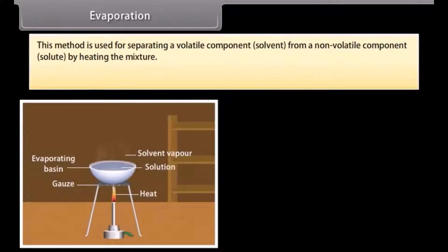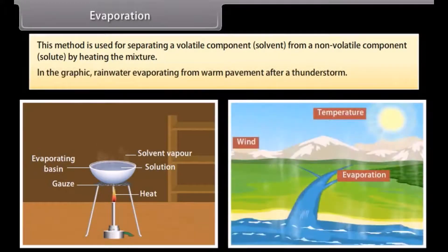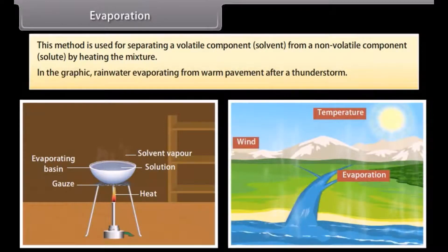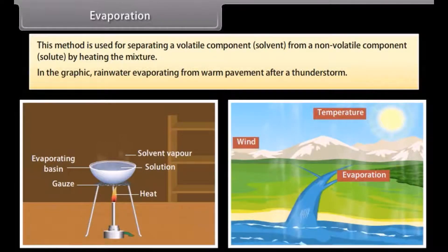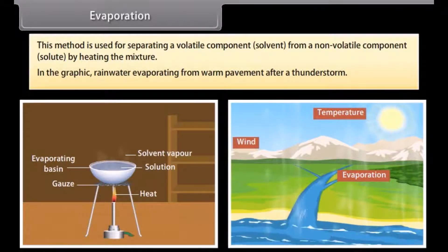Evaporation. This method is used for separating a volatile component (solvent) from a non-volatile component (solute) by heating the mixture. An example is rainwater evaporating from warm pavement after a thunderstorm.